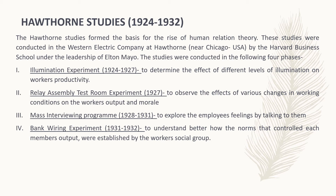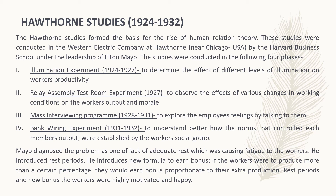The fourth and last phase is the bank wiring experiment from 1931 to 1932, aimed at understanding how the norms that control each member's output were established by workers' social groups. This experiment was conducted in a natural, non-experimental setting, and its results were different from the relay room experiment. Mayo diagnosed the problem as one of lack of adequate rest causing fatigue; he introduced rest periods and a new bonus formula whereby workers producing more than a certain percentage would earn a bonus proportionate to their extra production. Workers became highly motivated and happy.